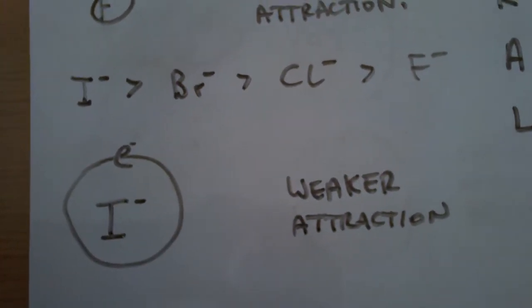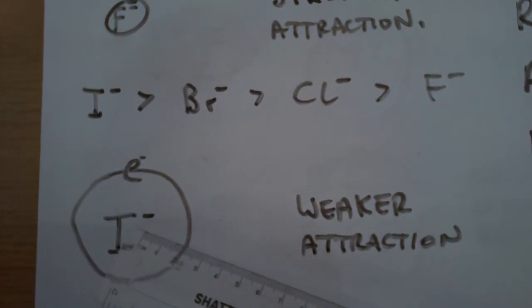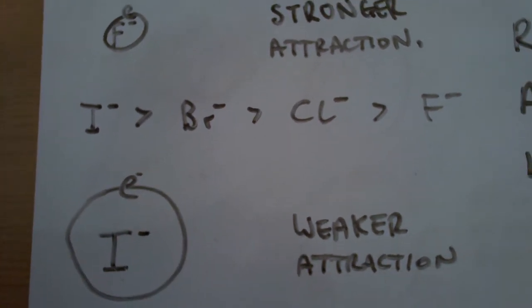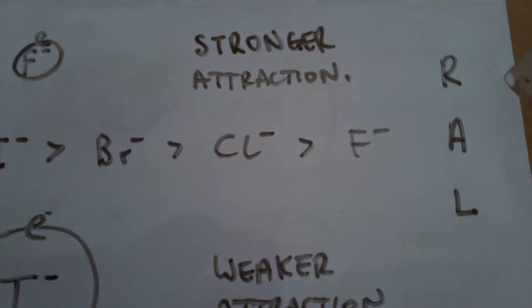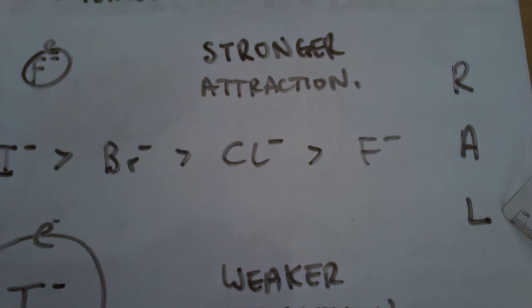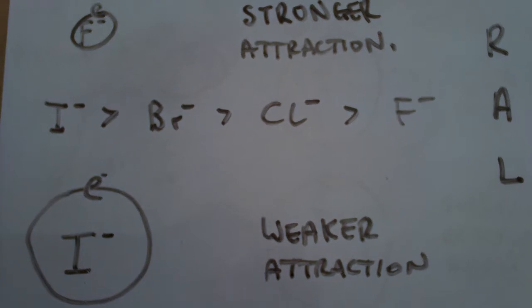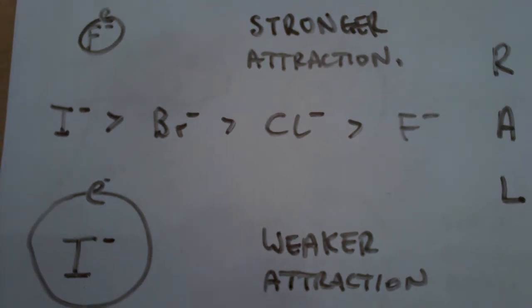Iodide underneath, so the iodide has a large distance between its nucleus and its outer electron, so it has a weaker attraction. Reducing agents lose electrons, so iodide is the best reducing agent of the three because it loses its electron most readily.